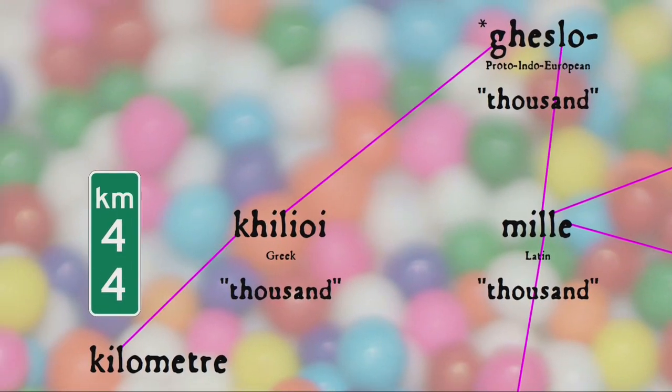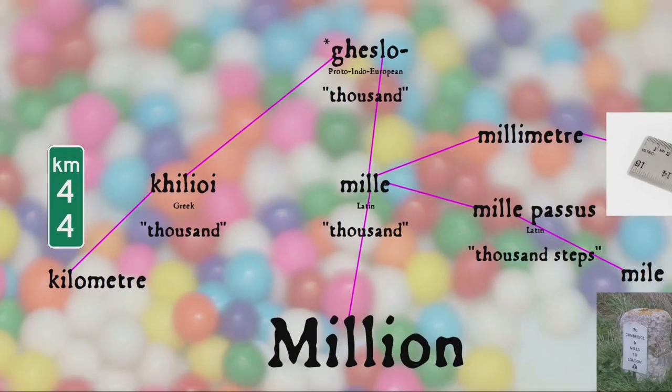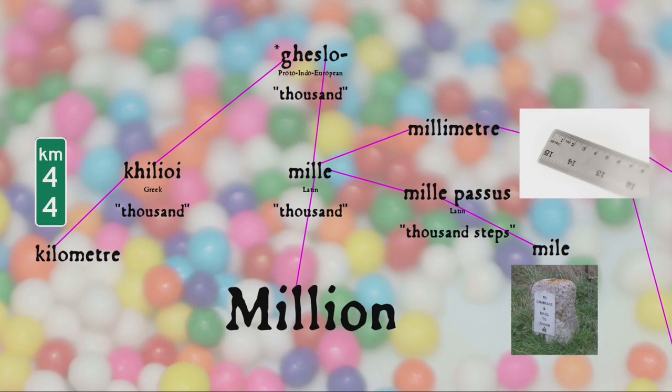Mile is also related through Greek to the prefix 'kilo', as in kilometre, a thousand metres. So a mile and a kilometre are, it turns out, etymologically related.